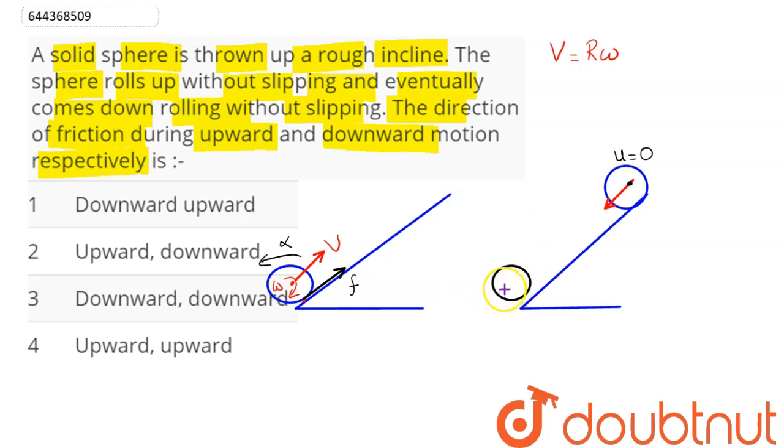Hence we can see it has velocity in downward direction, hence angular velocity for pure rolling condition must be in anticlockwise direction. Hence this is an accelerating motion, so velocity increases with the help of acceleration due to gravity. And the torque which rotates this sphere in anticlockwise sense must be acting in upward direction, providing an anticlockwise torque.